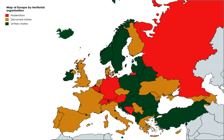In Europe, federalist is sometimes used to describe those who favor a common federal government, with distributed power at regional, national and supranational levels. Most European federalists want this development to continue within the European Union. European federalism originated in post-war Europe. One of the more important initiatives was Winston Churchill's speech in Zurich in 1946. In the United States, federalism originally referred to belief in a stronger central government. When the U.S. Constitution was being drafted, the Federalist Party supported a stronger central government, while anti-federalists wanted a weaker central government. This is very different from the modern usage of federalism in Europe and the United States.